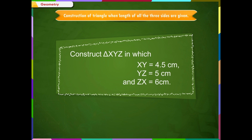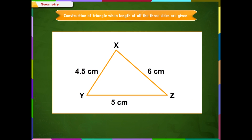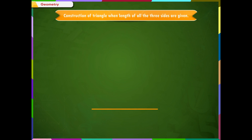Before starting our construction, we will draw a rough figure from which we will get an idea on how to proceed stepwise in our construction. Step 1: From the rough figure, it is clear that first we have to draw a line YZ of length 5 cm.